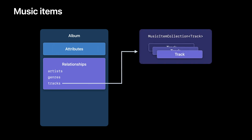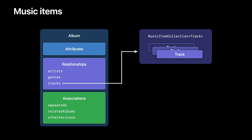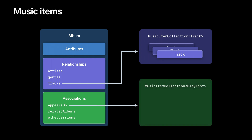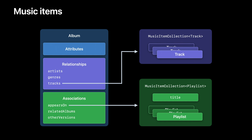For example, the result of the tracks relationship is a collection of values of type track, which is another type of music item. Finally, in addition to these strong model-level relationships, Album offers several weaker associations of related content. Associations are very similar to relationships, but they are typically more ephemeral or more editorially driven. For example, the appears-on association on an album returns a collection of playlists, but unlike collections for relationships, this one also has a title.